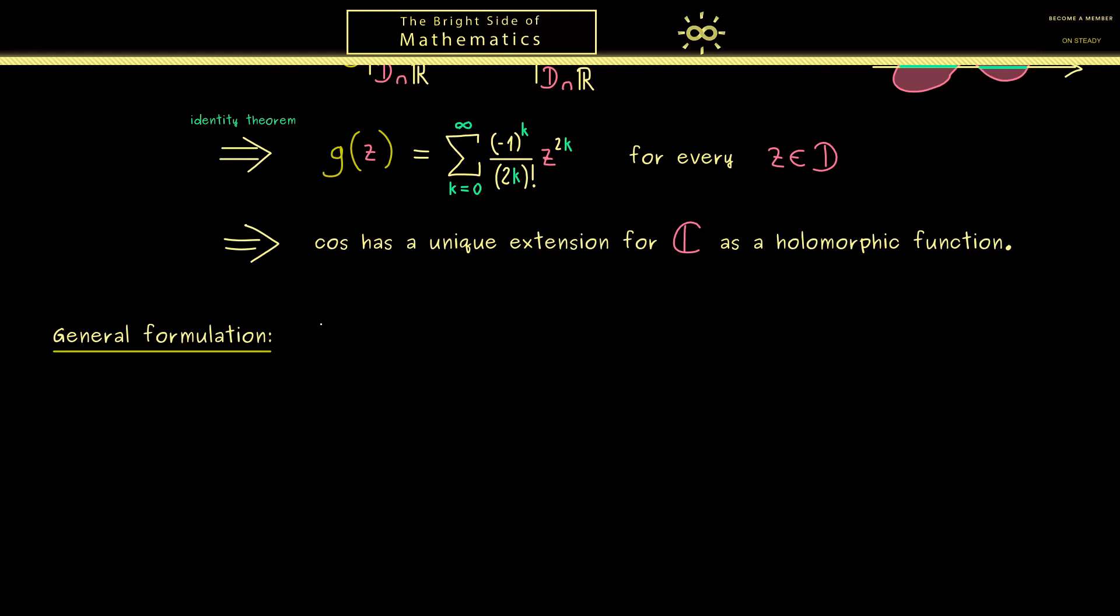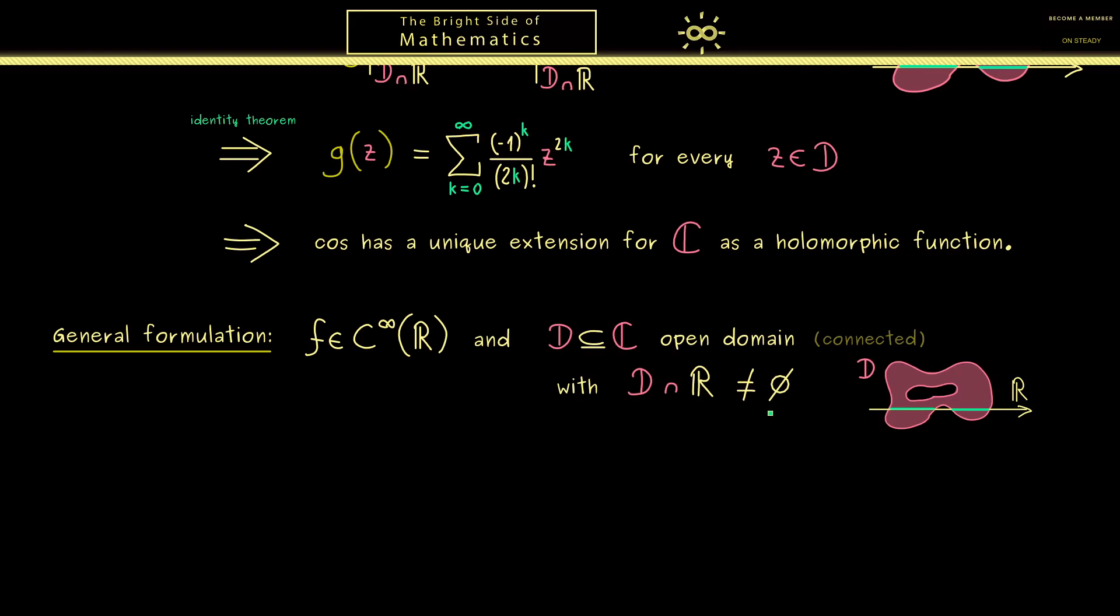Let's start with a C infinity function on R called f. Recall we already know that holomorphic functions are C infinity functions. Therefore we really have to start with a C infinity function on R, otherwise it wouldn't be possible to extend it to a holomorphic function defined on C. In addition, we choose an open domain in C. This D should have an intersection with the real number line, because only then it makes sense to extend the function f to a bigger domain.